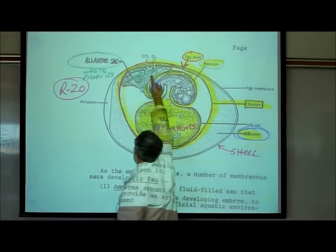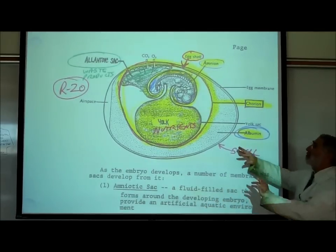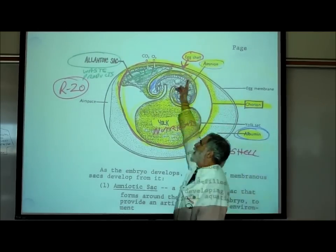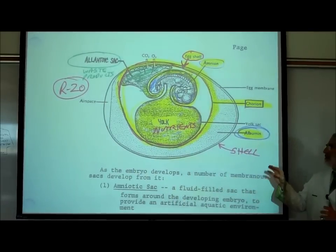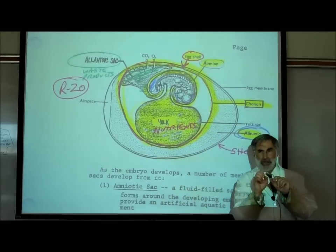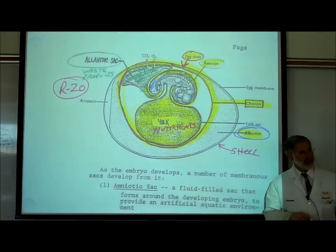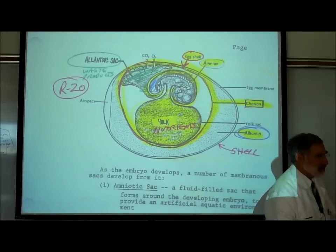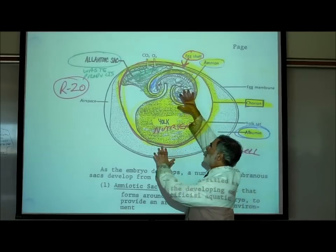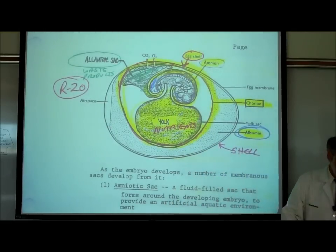The chorionic sac surrounds the other three sacs, and human babies are also surrounded by a chorionic sac. Then there are egg whites made of a protein called albumin, and then the shell. The only difference between a reptilian egg and a bird egg is the shell — a bird egg has a calcium shell that's brittle, while a reptilian egg's shell feels soft, like the skin of a lizard or snake. This allows reptiles to live away from water, since the embryo develops in this artificial water environment inside the egg.